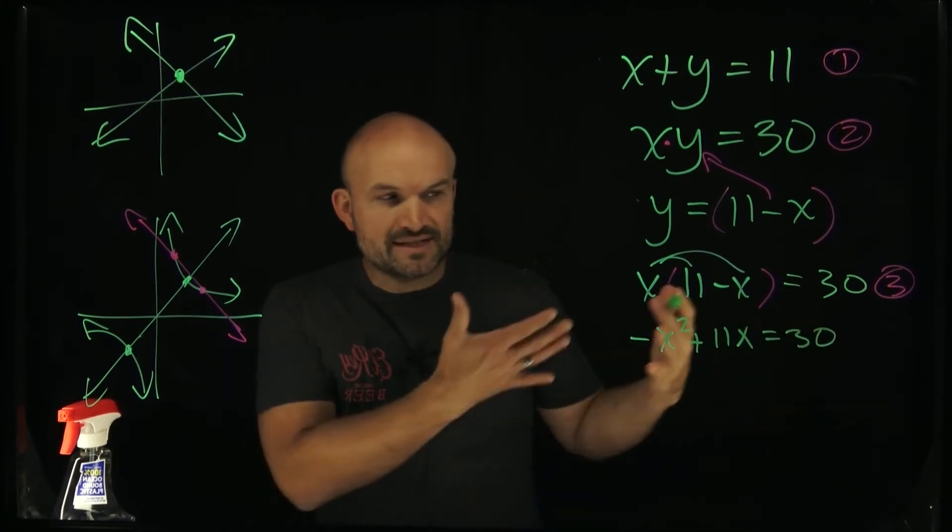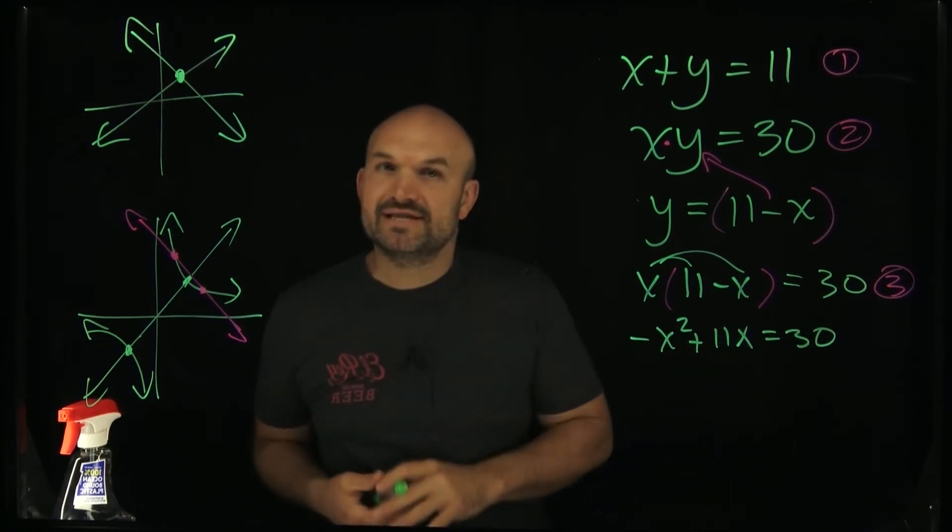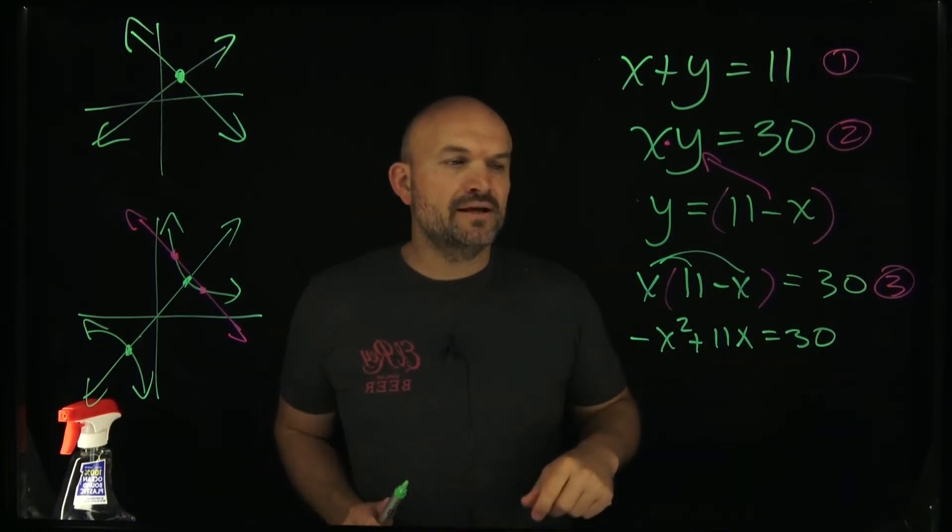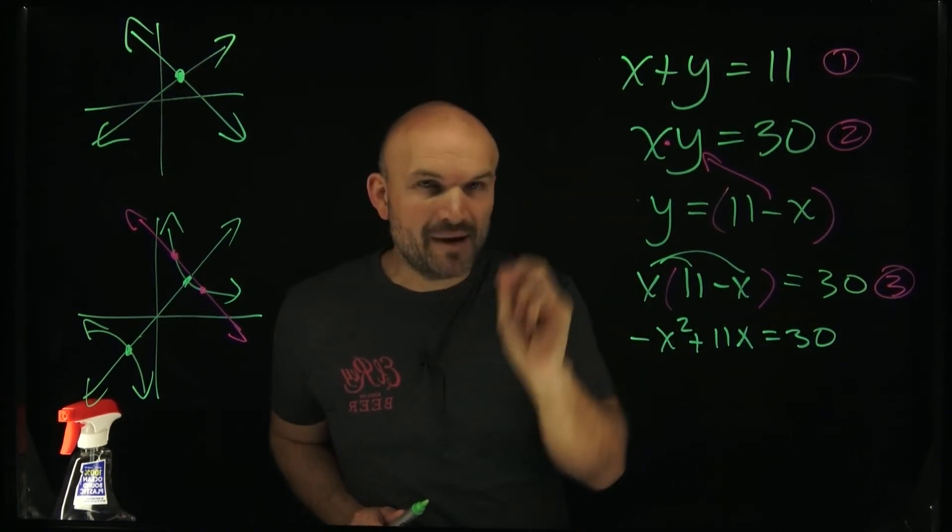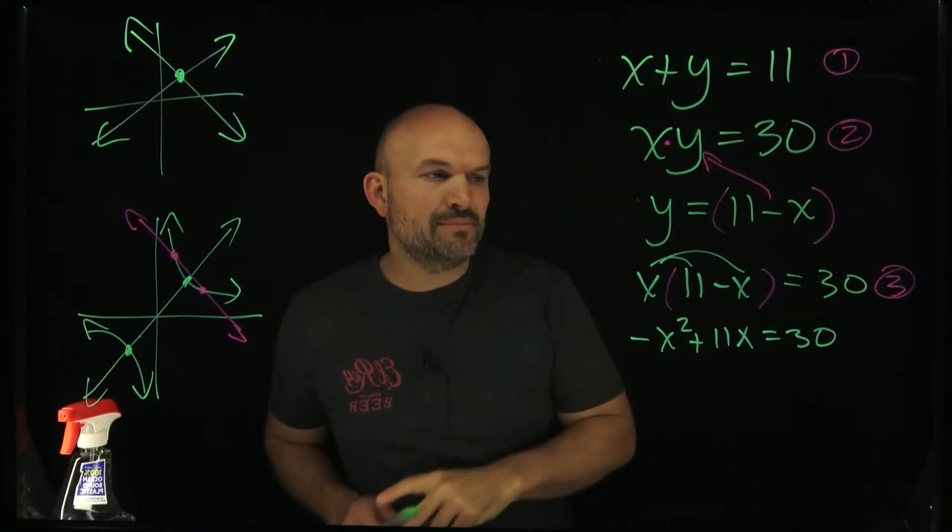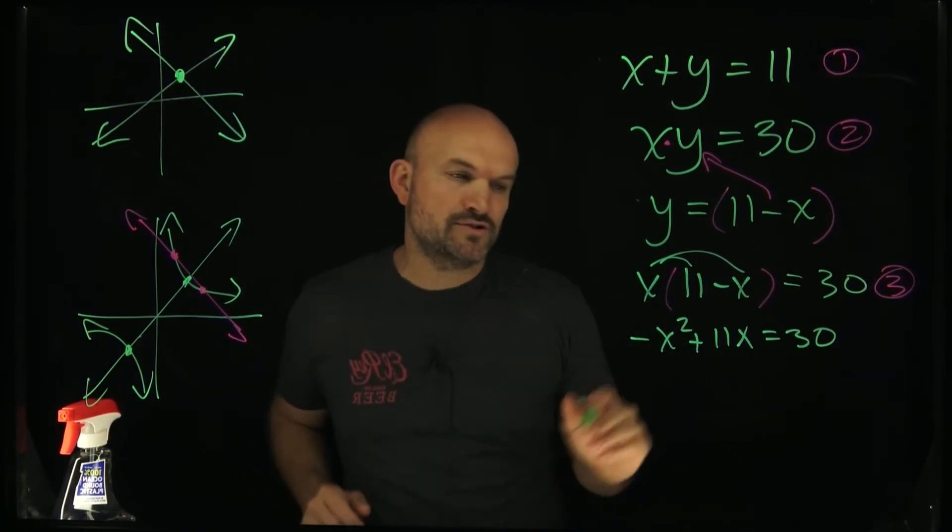And now you can notice that this is a quadratic equation. When you have a quadratic equation, what do you want to do? You want to get everything over to the same side and set it equal to zero. Now I don't want to get the 30 over to the left-hand side. That would seem obvious, but this is a negative x squared. So what I'm going to do is put everything over to the right-hand side. So therefore now I'm going to have a positive x squared.